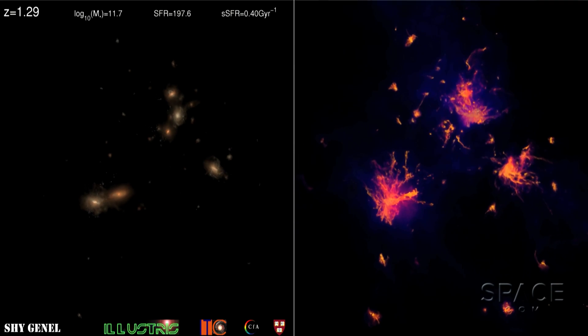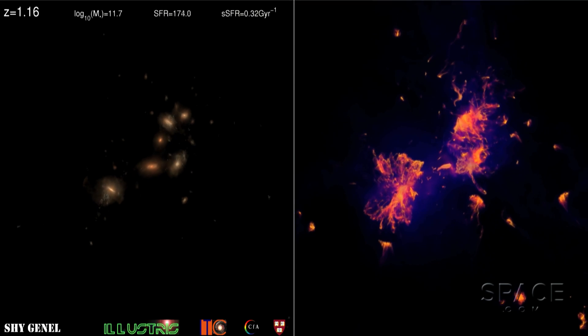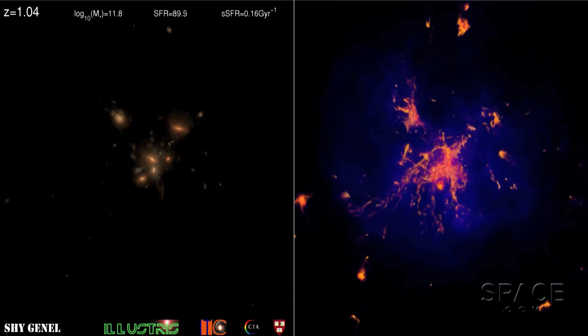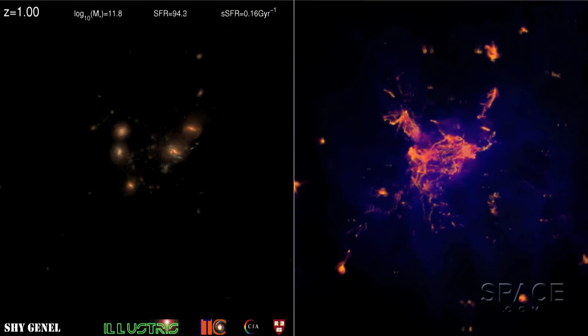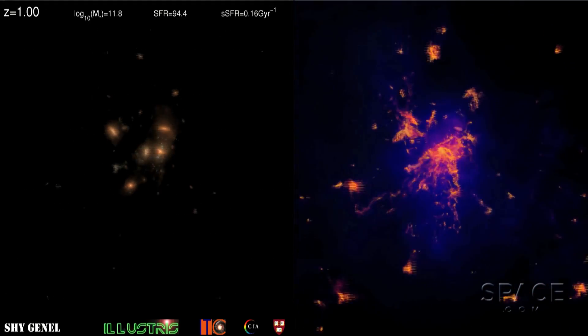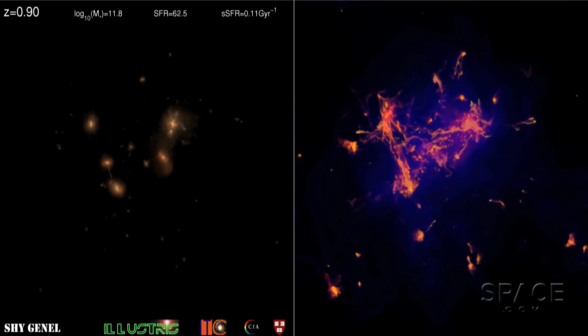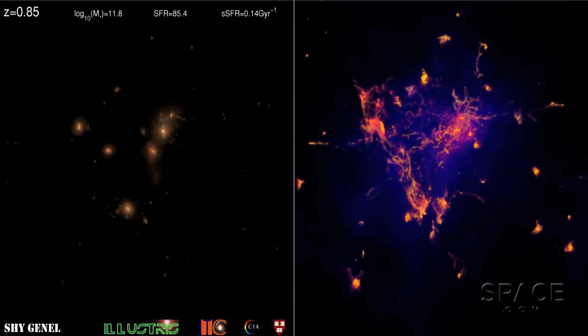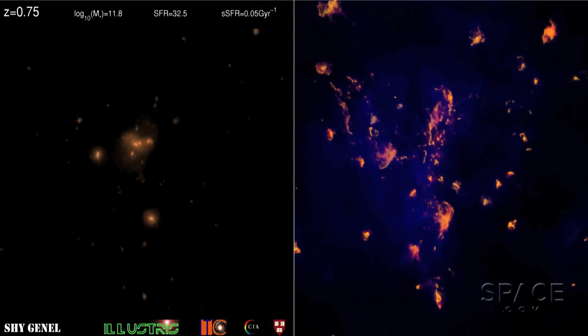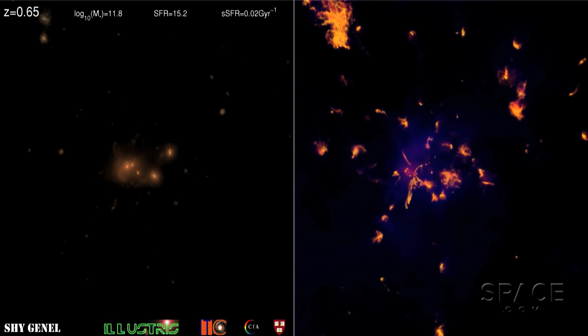Here, we watch some of the earliest galaxies in swirling interaction over billions of years. The view in normal starlight is on the left. But on the right, we can now watch the gas density of the same events. This is how spiraling galaxies disrupt one another on their way to joining together to form a giant elliptical galaxy.